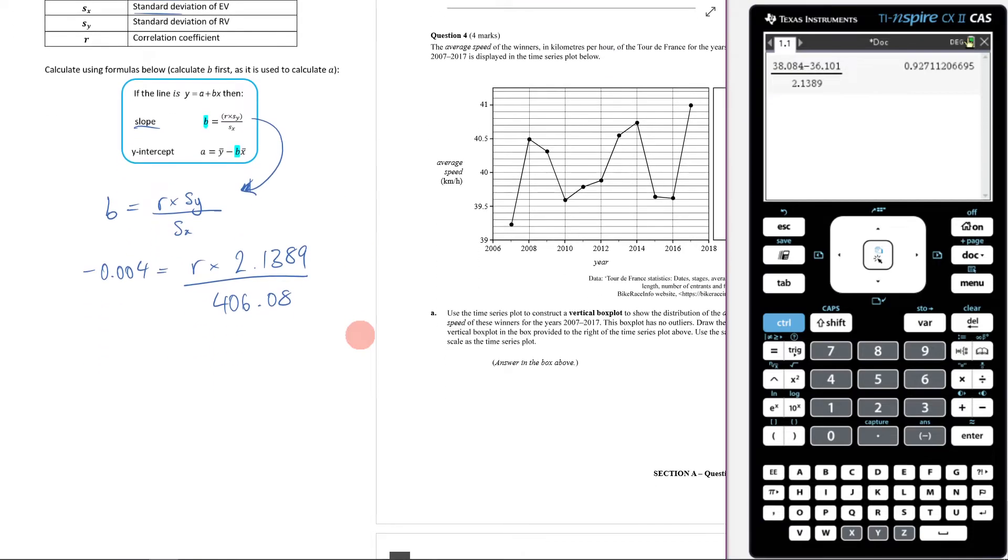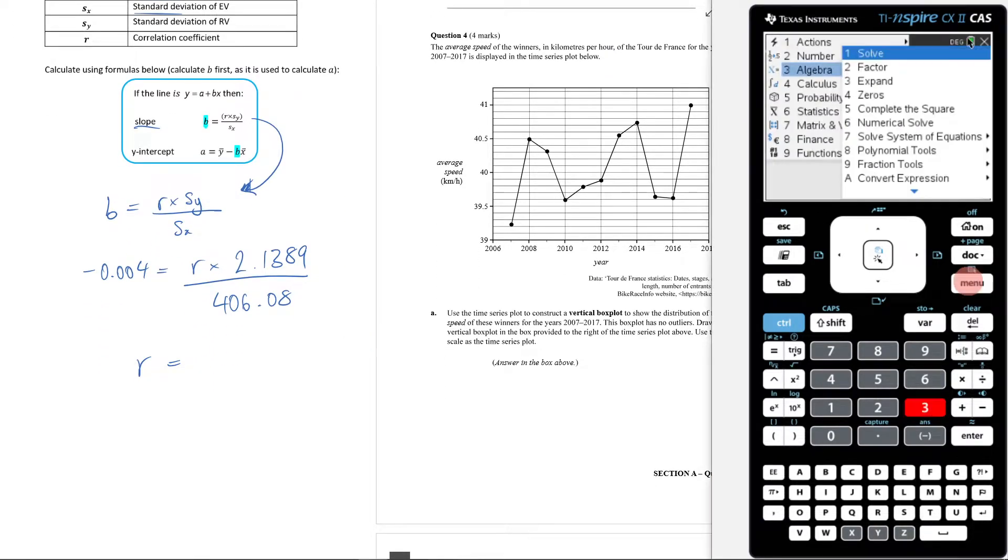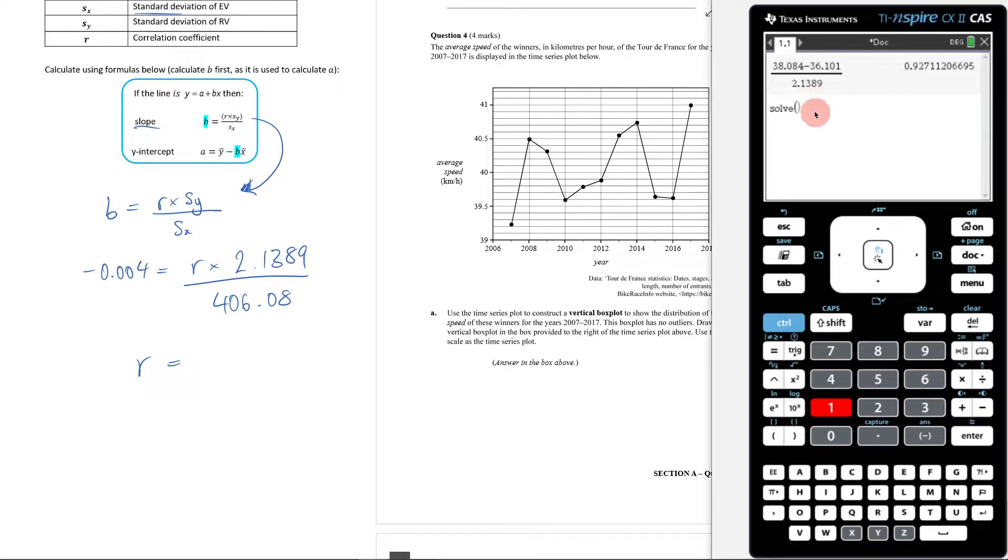And then I'm going to solve it for r. So I'll come to my CAS, menu 3, 1. I'm going to put in negative 0.004 is equal to r times 2.1389 over 406.08. I'm solving it for r.